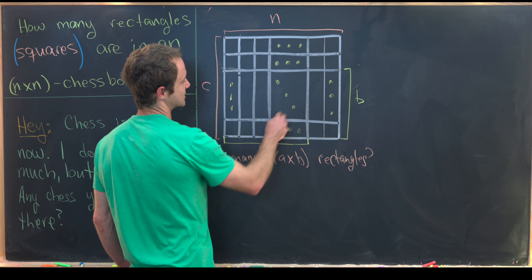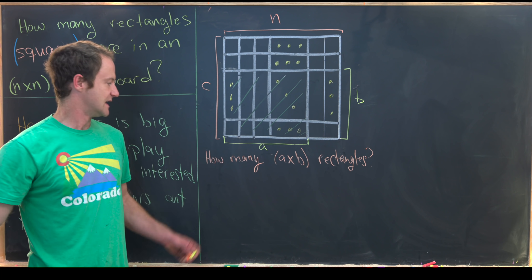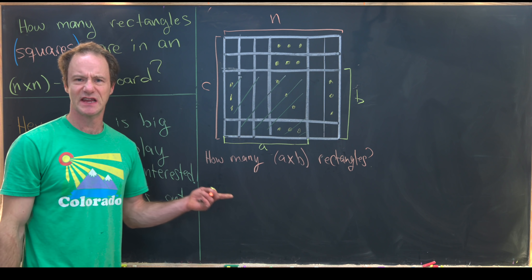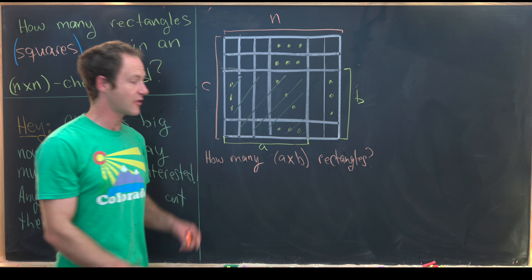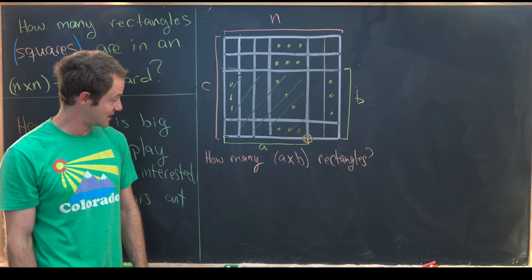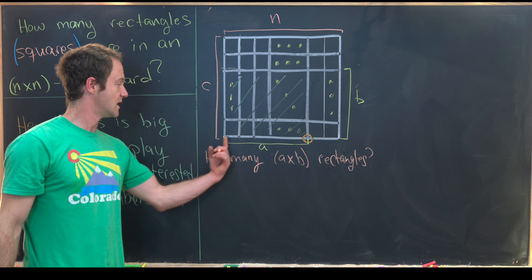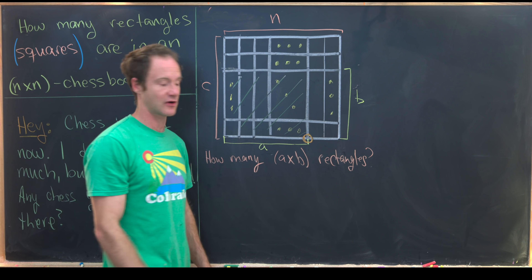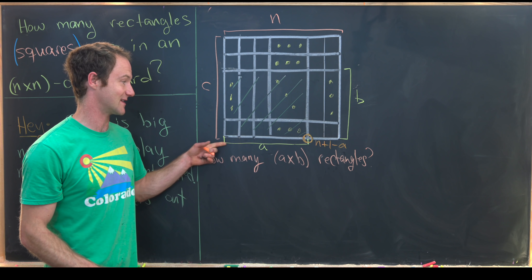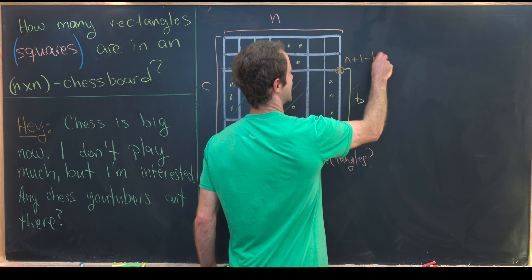So our rectangle is shading in this area right here. How many such rectangles are there? We can slide this rectangle over until we hit the end — we just need to know how many units we can slide it over, or in other words, how many choices there are for the endpoint. Since we've got n plus 1 edges, there are n plus 1 minus a choices for the last endpoint if we want a rectangle with side length a on the bottom.